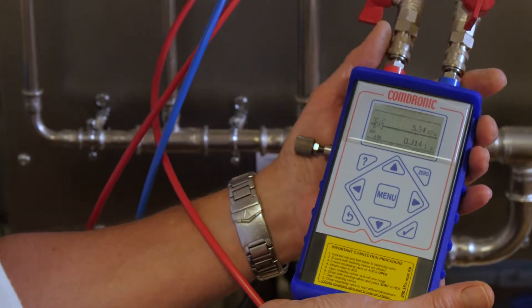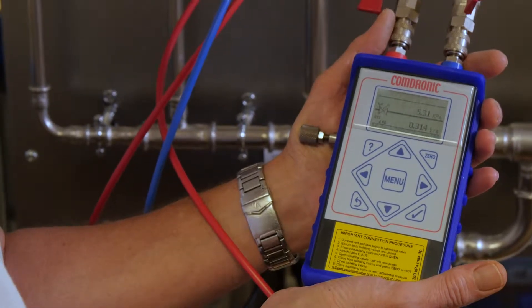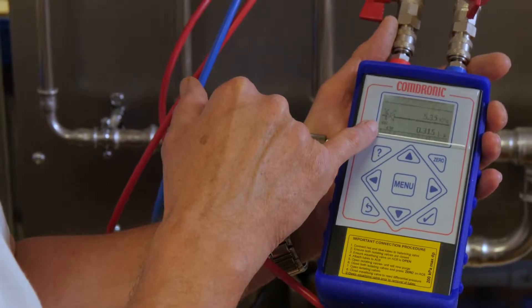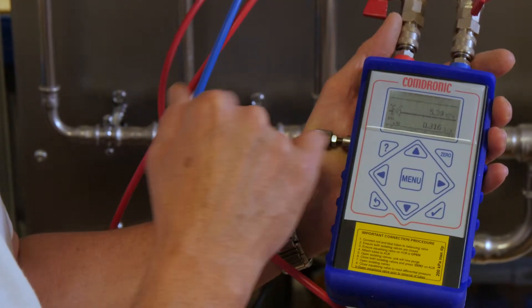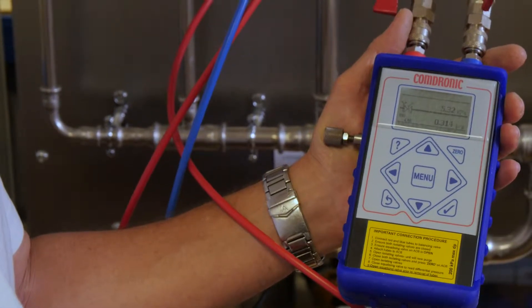And we have a differential pressure across the valve of 5.35 kilopascals. And using the KVS for this valve which is 4.9, that equates to a flow rate of 0.314 litres per second.